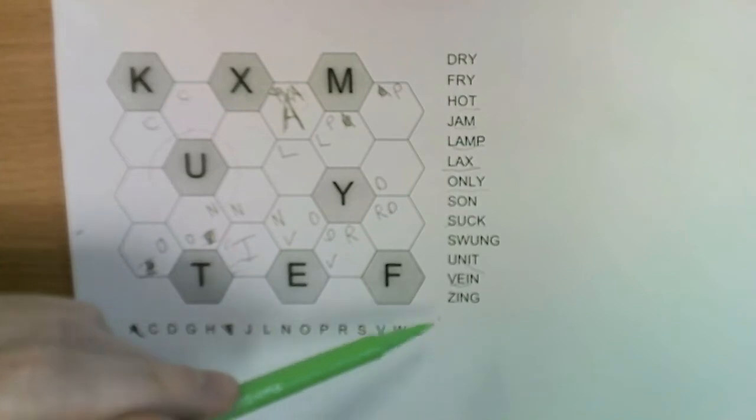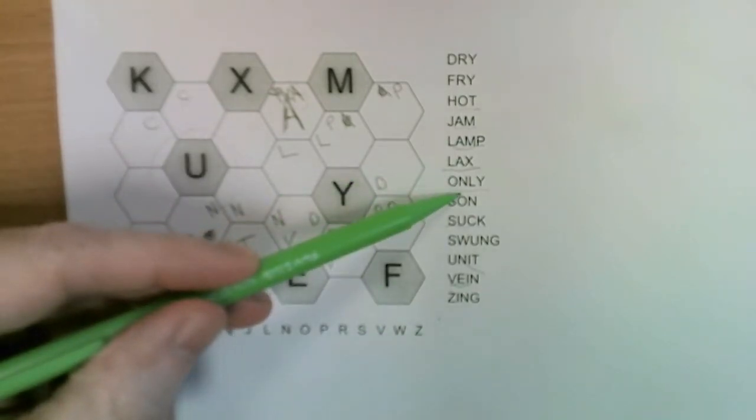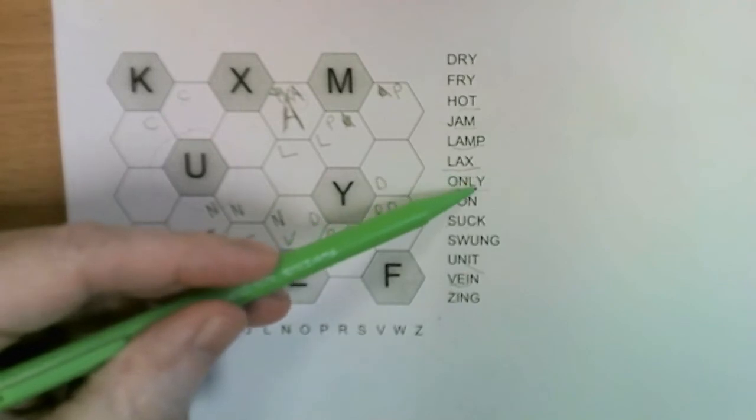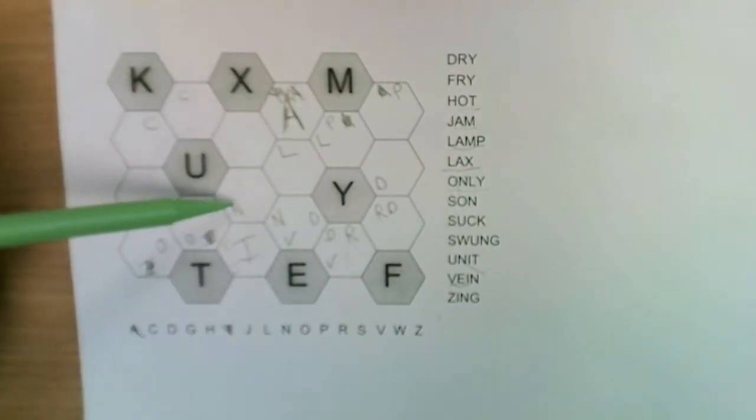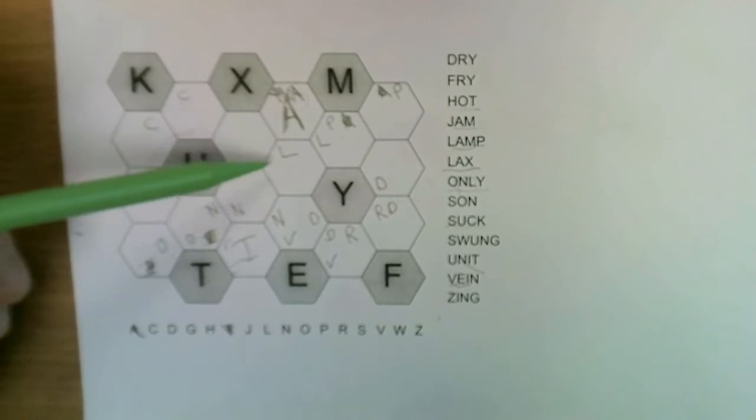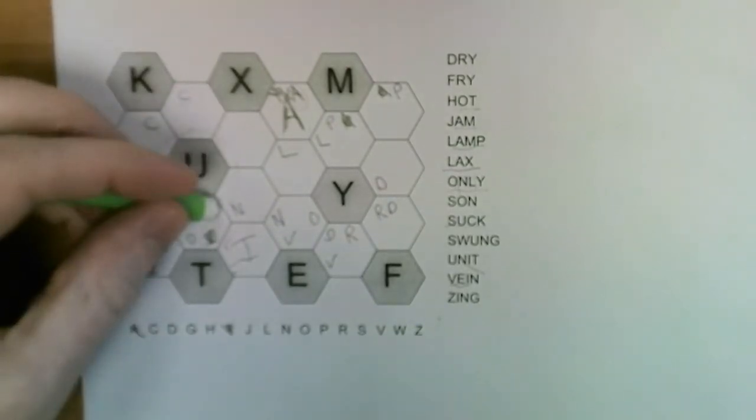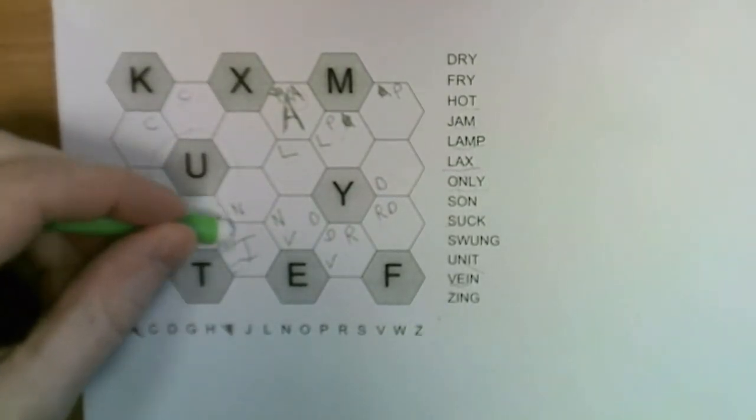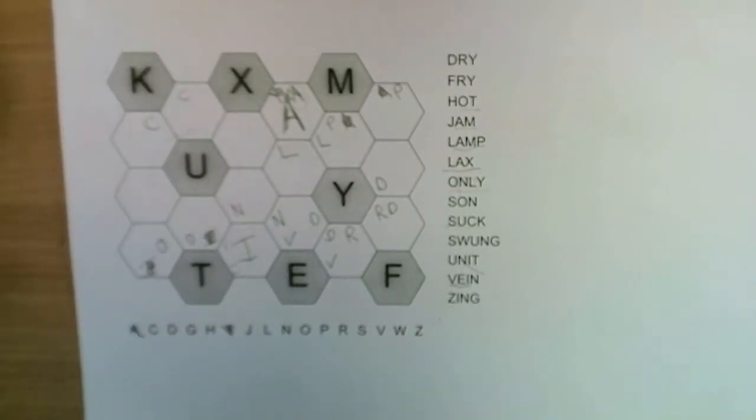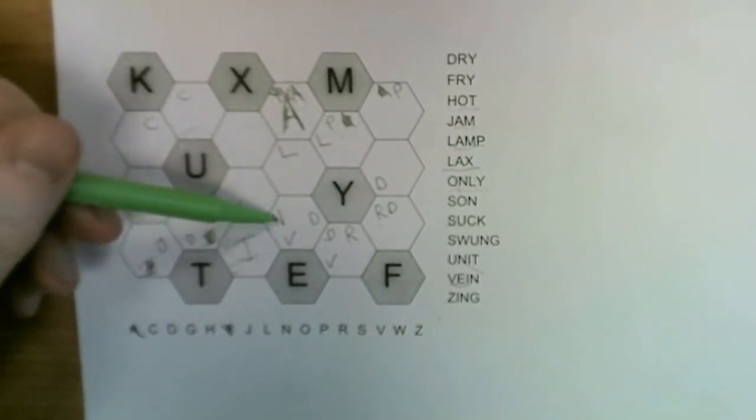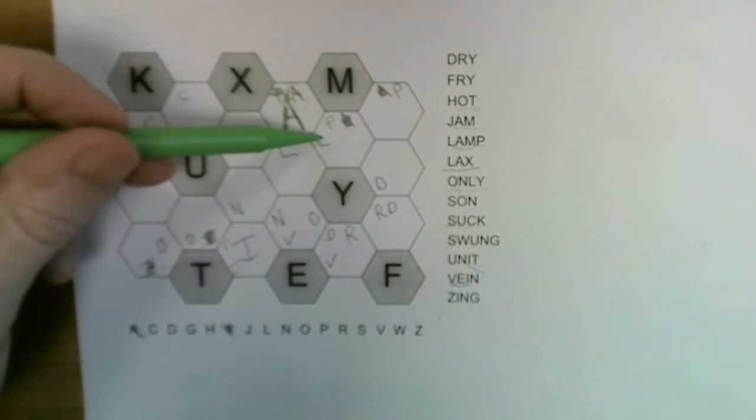We know the N also has to border the L. So these two are okay, but this N can't be where the N really goes because it's two squares away from an L, so we can cross that out.